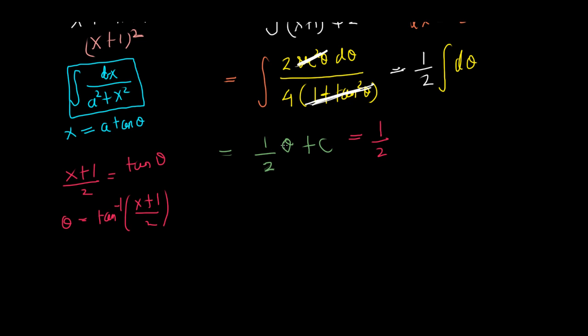So, half of theta. But theta is this thing. We write that because it is in terms of x. It's 1 half times the tangent inverse of x plus 1 over 2. And there is a plus c. So, that is our final answer.